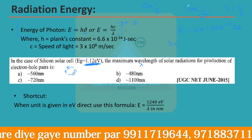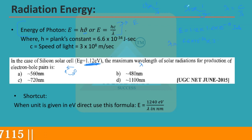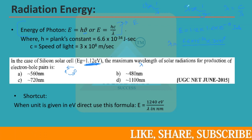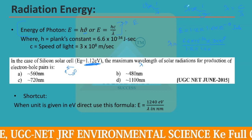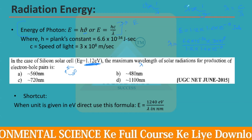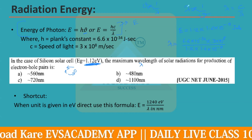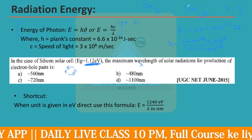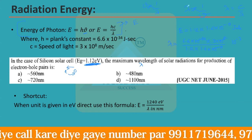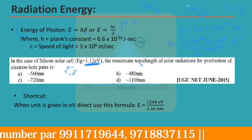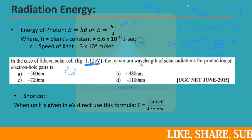Rearranging, λ = hc/E = (6.6 × 10⁻³⁴ × 3 × 10⁸) / (1.12 × 1.6 × 10⁻¹⁹). The exponents give 10⁻³⁴ × 10⁸ = 10⁻²⁶ in the numerator, divided by 10⁻¹⁹ in the denominator, leaving 10⁻⁷. Solving the numerical coefficients (6.6 × 3 ÷ (1.12 × 1.6)) gives approximately 11.4, so λ ≈ 1.14 × 10⁻⁷ meters.